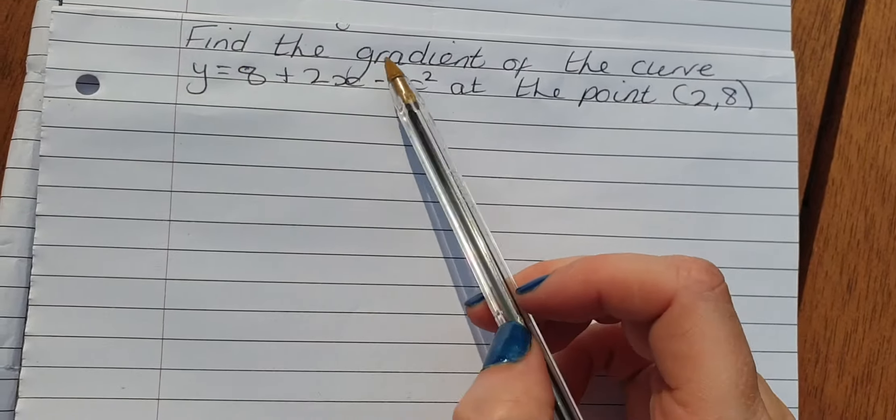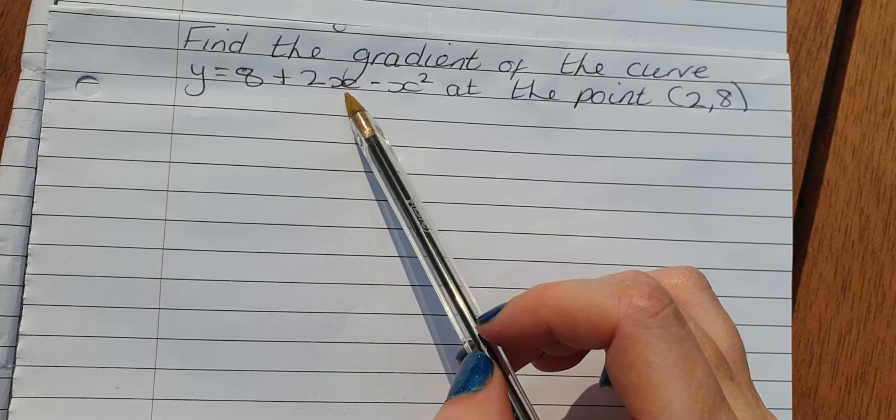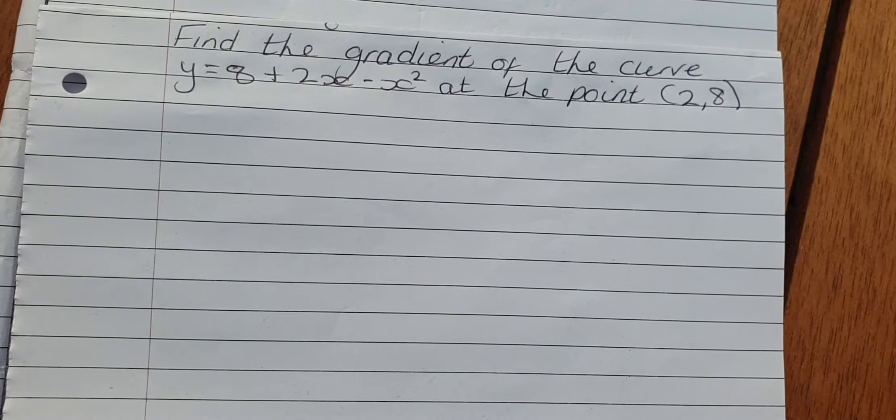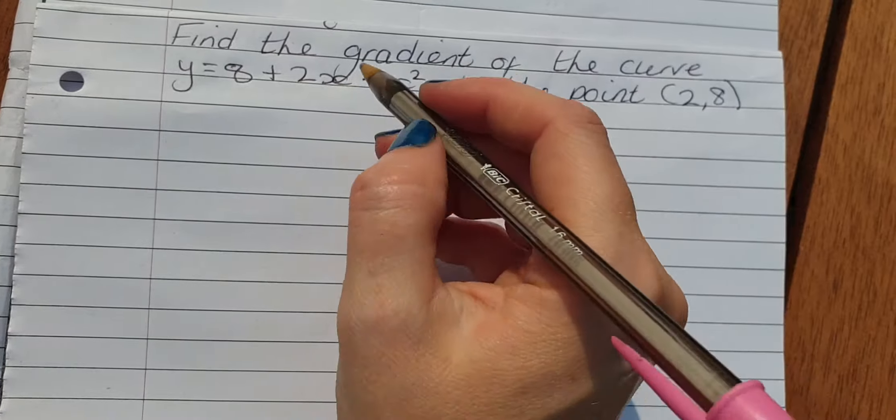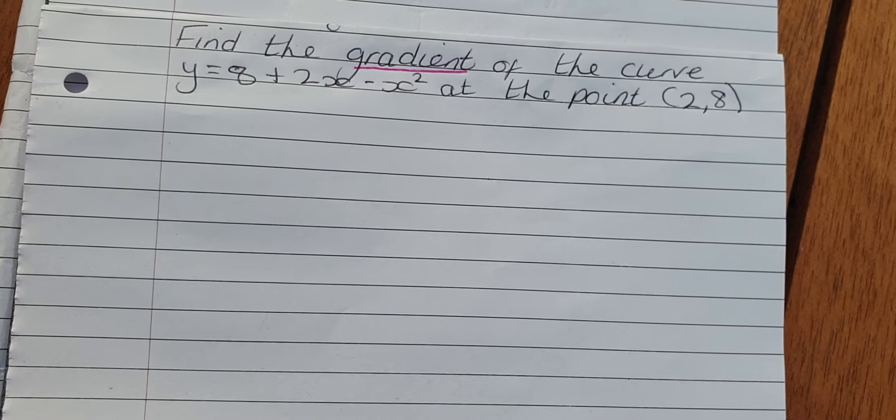This question says find the gradient of the curve y equals 8 plus 2x minus x squared at the point (2, 8). Whenever you are asked to find the gradient, we need to remember that we're being asked to differentiate.